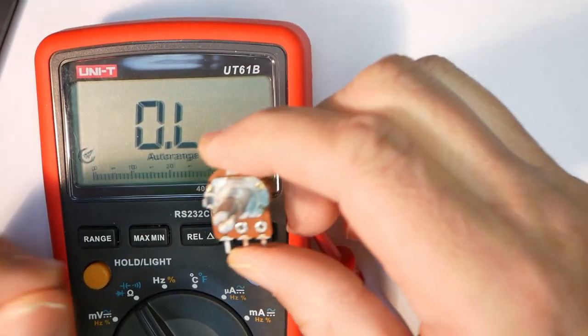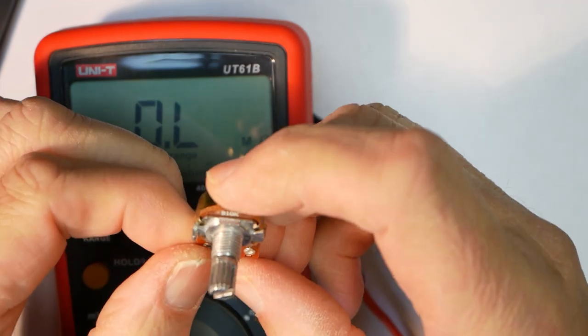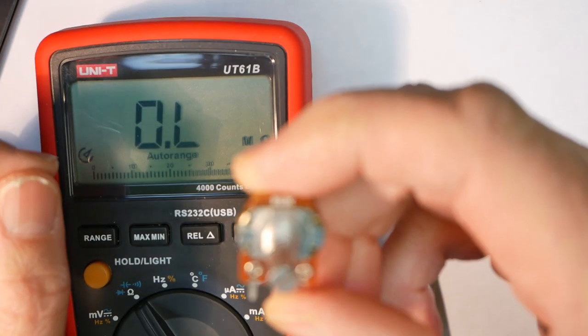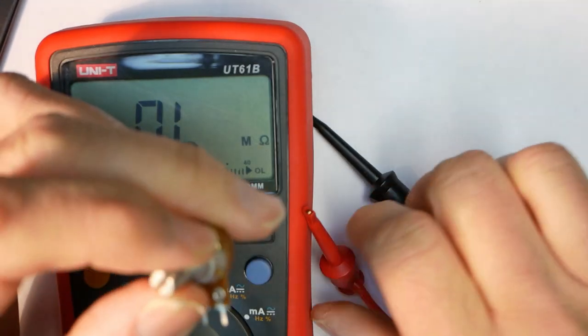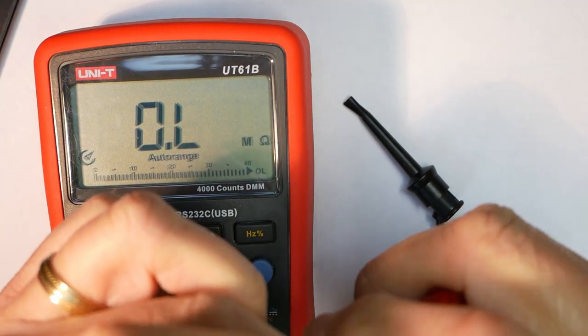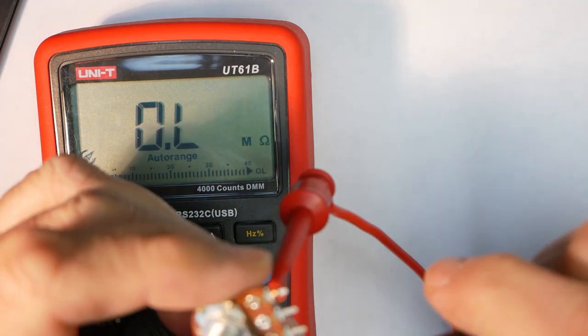So anyway, here we have the potentiometer, and it's normally 10 kilo ohm. Let's check it out with the ohm meter and see what we can find.